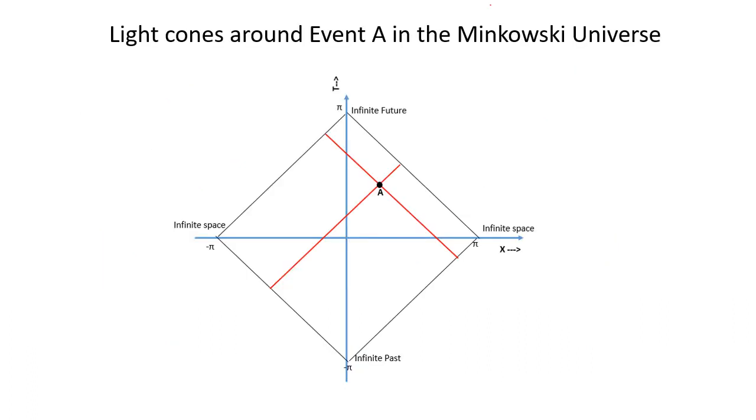So if we consider an event at location A in the Penrose diagram, the fact that light travels at 45 degrees means that light cones still actually have the same shape as in the original spacetime diagram.